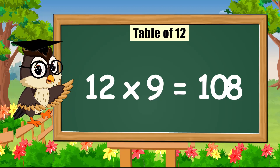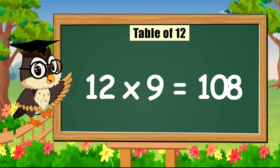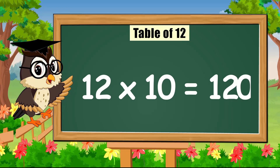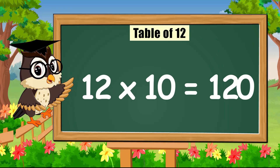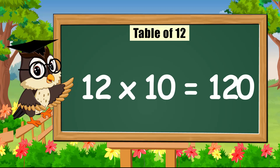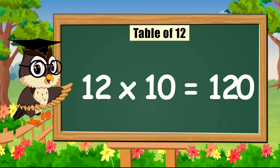Twelve times eight is ninety-six. Twelve times nine is a hundred and eight. Twelve times ten is a hundred and twenty.